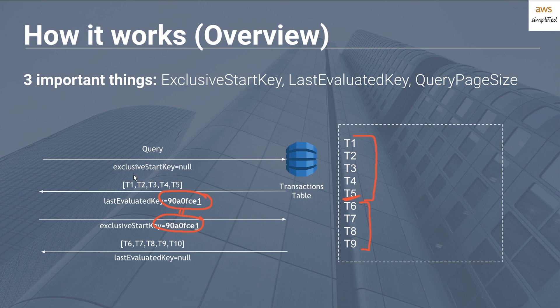To recap: initially you make a query with exclusive start key set to null. The results will be either one megabyte worth of data or your query page size, whichever is hit first. If there's more data to retrieve, the last evaluated key will be non-null. You pass that in as the exclusive start key on your next call to get where you left off. When last evaluated key is null, you're done. This is actually one of the rare cases where a do-while loop makes perfect sense.